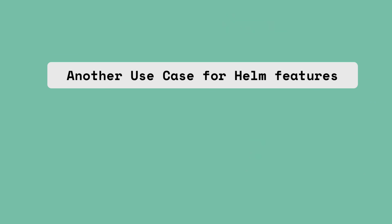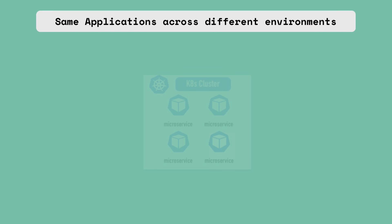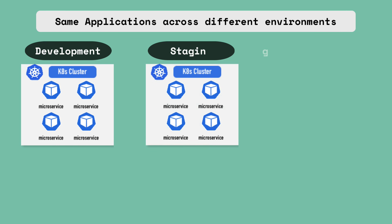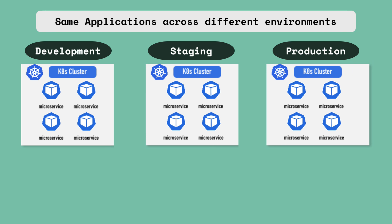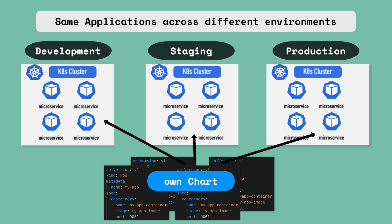Another use case combining Helm's package manager and templating engine features is deploying the same set of applications across different Kubernetes clusters. For example, if you have a microservice application to deploy on development, staging, and production clusters, instead of deploying individual YAML files separately in each cluster, you can package them into your own application chart containing all necessary YAML files, and then redeploy the same application across different Kubernetes environments using a single command.